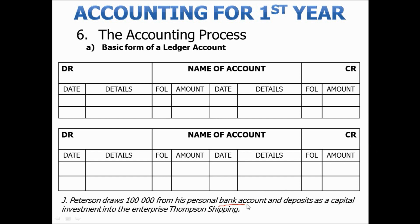We know that we're dealing with money coming into the bank account, and we know this is a capital investment. The bank account is always an asset, and we know that assets increase on the debit side. Capital has to do with the equity of the business, and we know that equity increases on the credit side. We need to identify the two accounts involved — in this case, bank and capital.